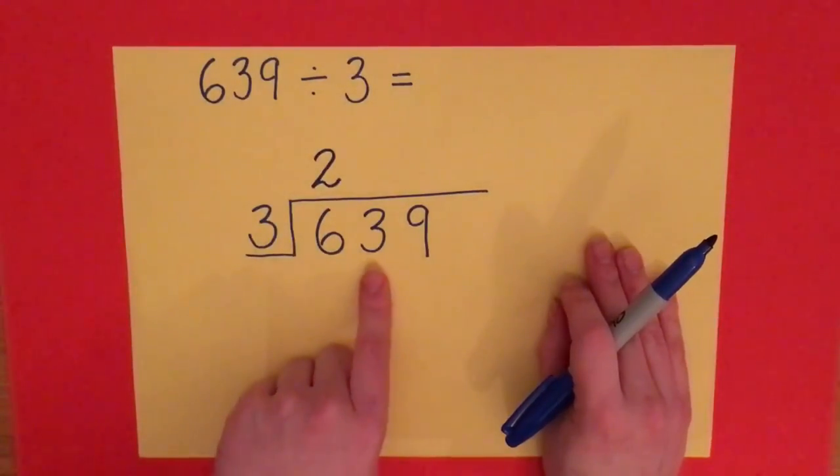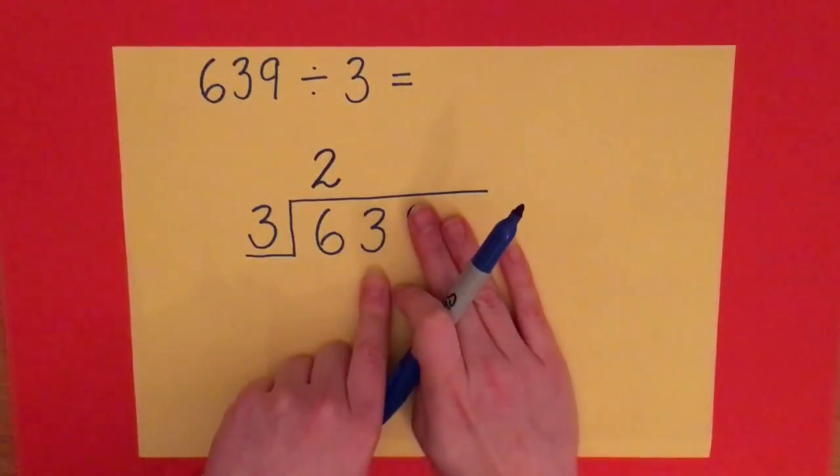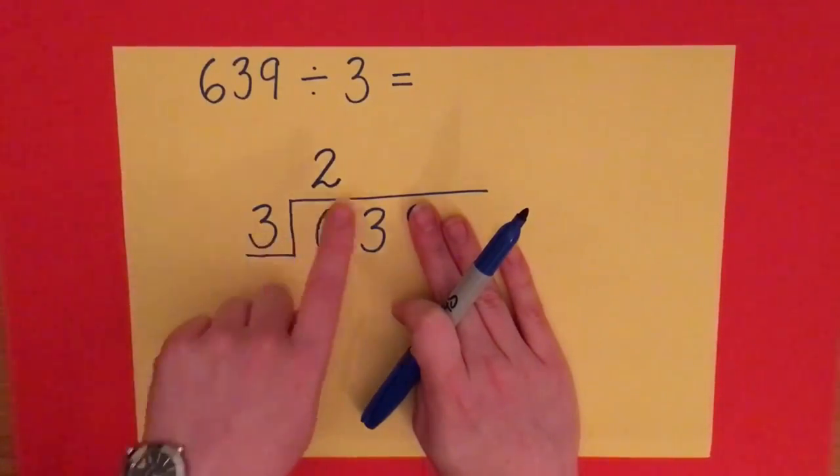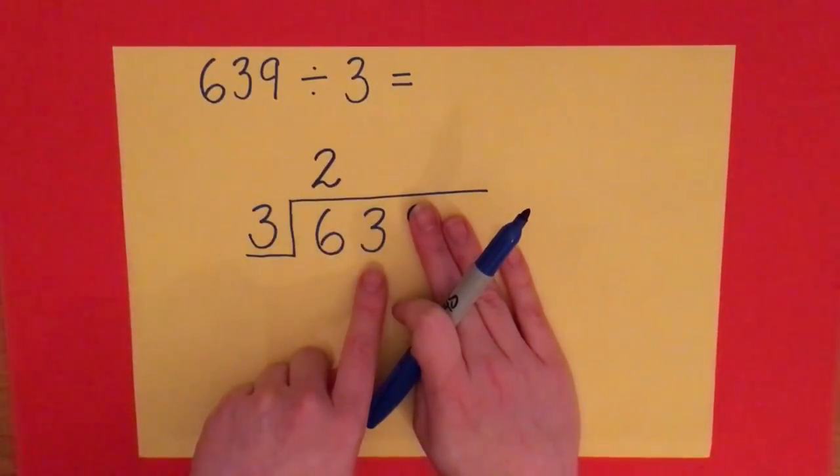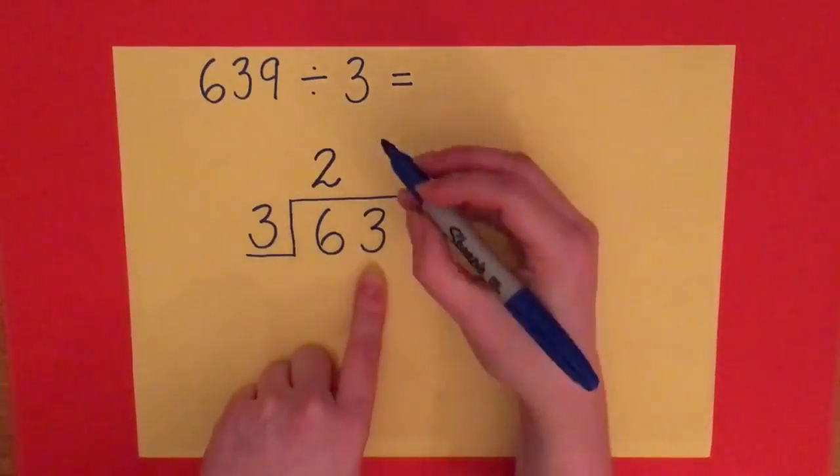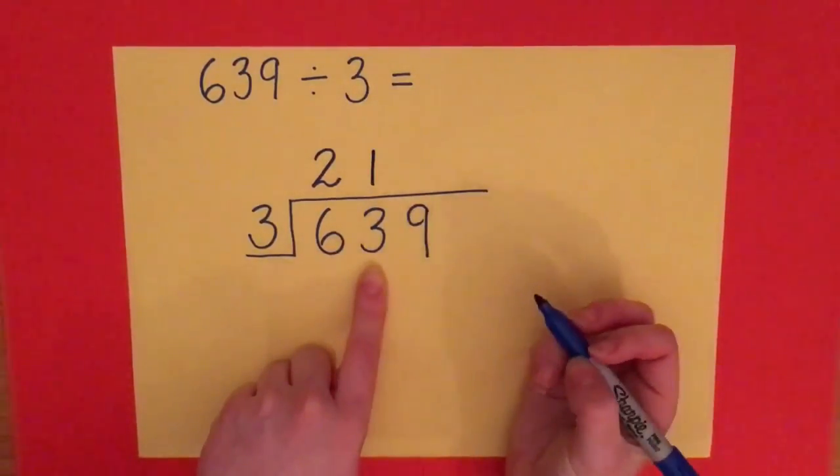Okay, I can now move on to the next number, that's 3. So again, the 9 is still covered up. So 3 times what makes 3? Well, that's an easy one: 3 times 1 is 3.